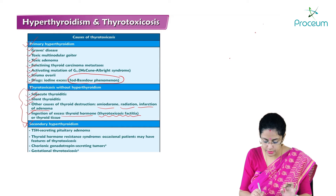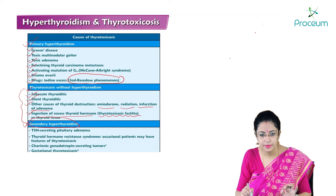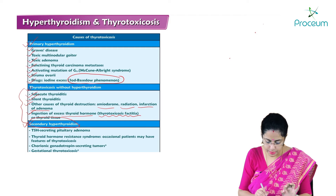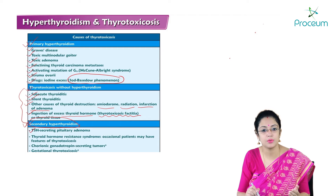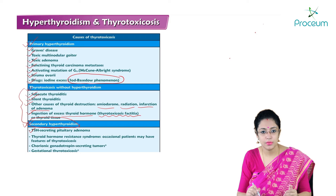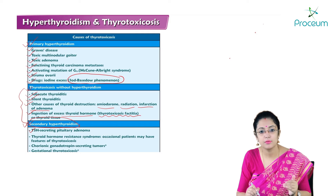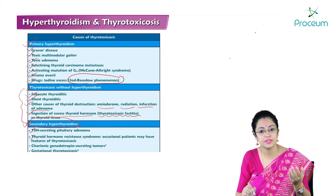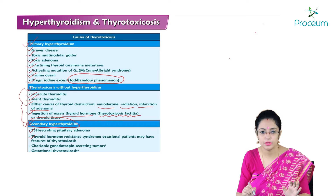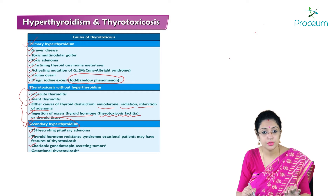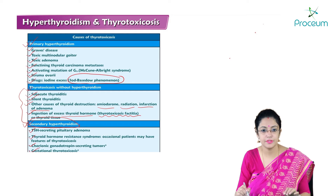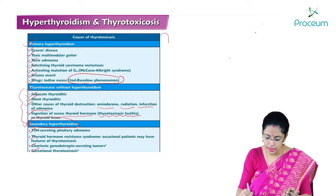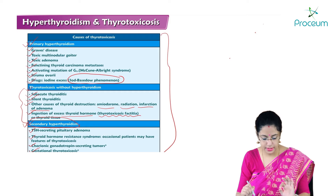Secondary hyperthyroidism means there is a problem in the anterior pituitary or the hypothalamus. In the pituitary, it may be a TSH-secreting pituitary adenoma, causing more and more TSH production, which stimulates the thyroid gland, resulting in increased thyroid hormone. Thyroid hormone resistance syndrome also causes secondary hyperthyroidism. Other causes include chronic gonadotrophin-secreting tumours and gestational thyrotoxicosis — thyrotoxicosis during pregnancy.